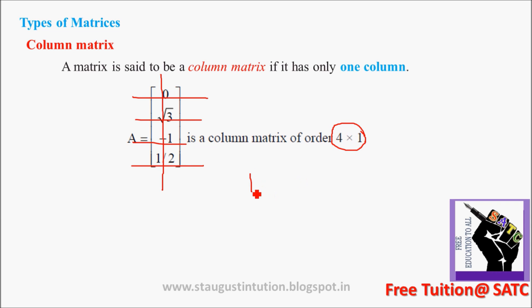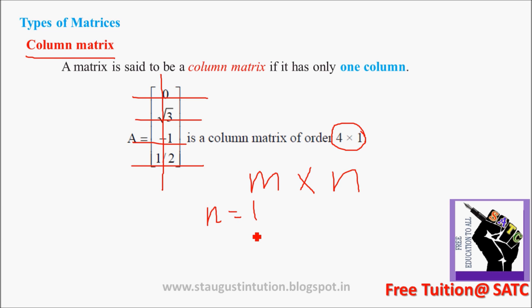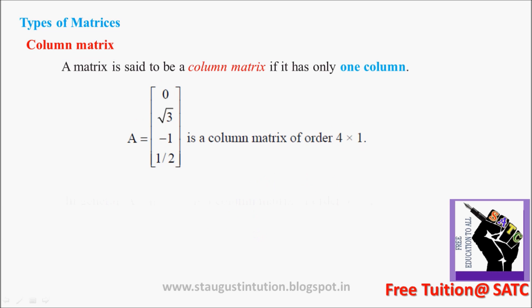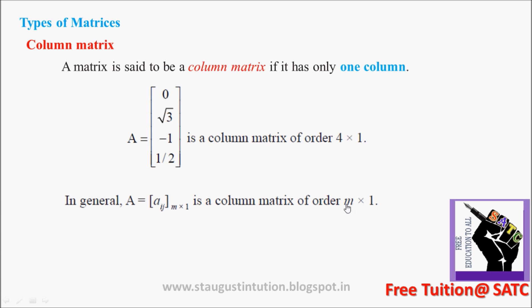Generally, a matrix is of order M by N. For a Column Matrix, N is always equal to 1. So in general, the order of a Column Matrix is M by 1.